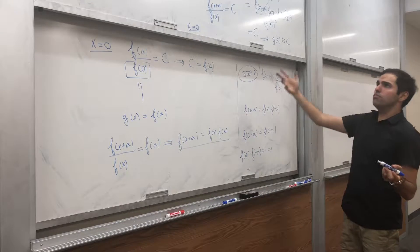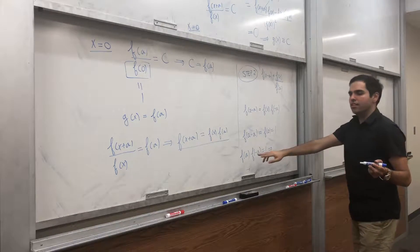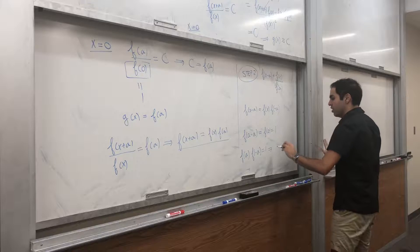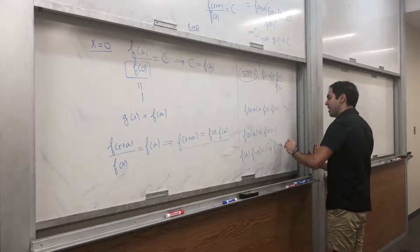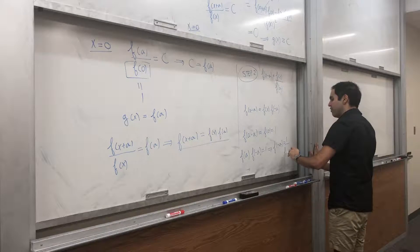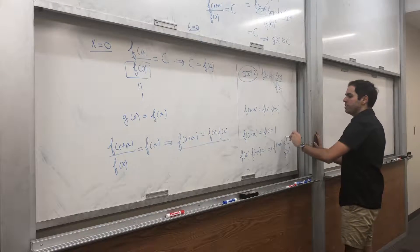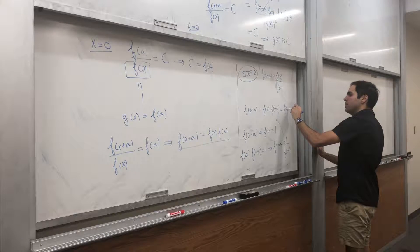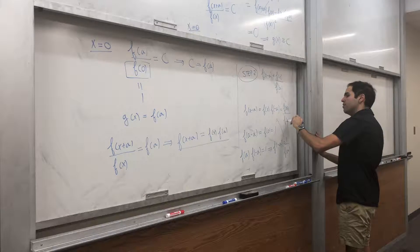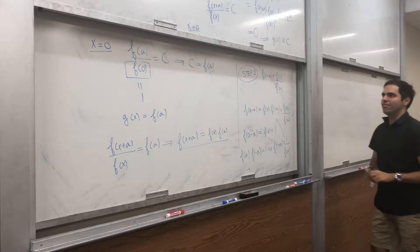assuming this is, I guess we might not even need that it's positive. Maybe non-zero is enough. We get f of minus a equals to one over f of a. So, using this property here, we just get f of x times one over f of a, which is f of x over f of a.